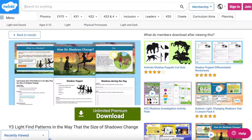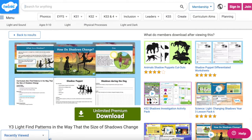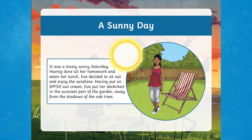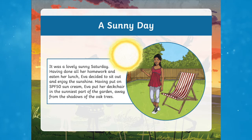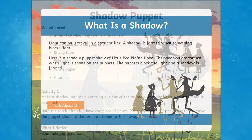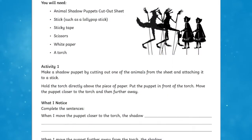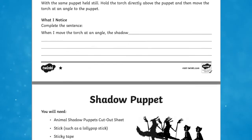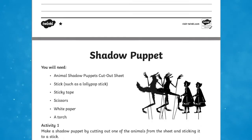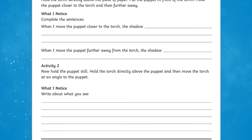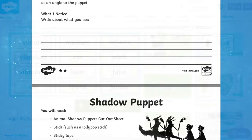The Light and Shadows Lesson Pack is a great resource that covers the national curriculum objectives. The pack contains a PowerPoint looking at how shadows are formed and how they can change depending on the positions of the light source and the object creating the shadow. The differentiated worksheets provide a recording sheet and prompts for an investigation into the size of shadows at different times of day, and a shadow puppet worksheet providing instructions for making and investigating shadow puppets.